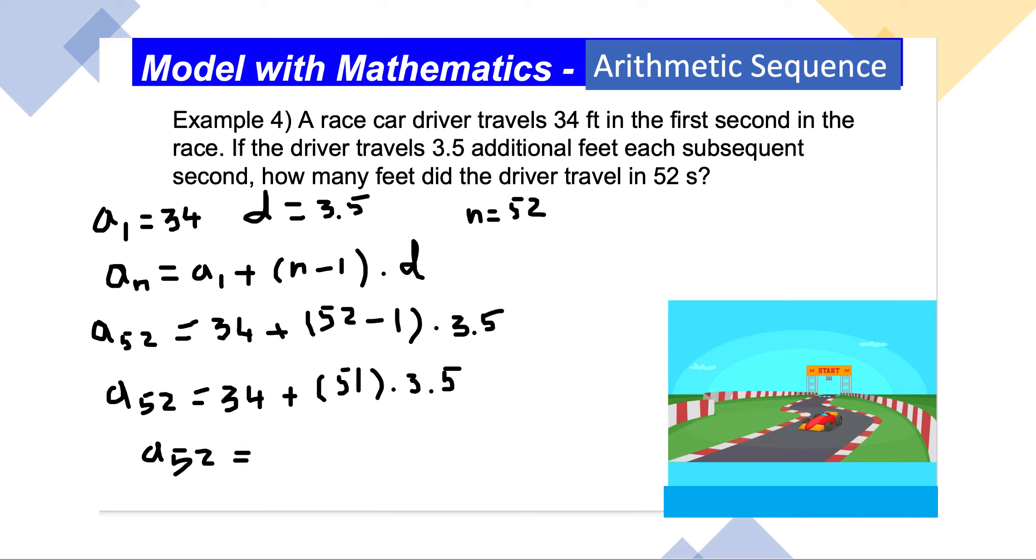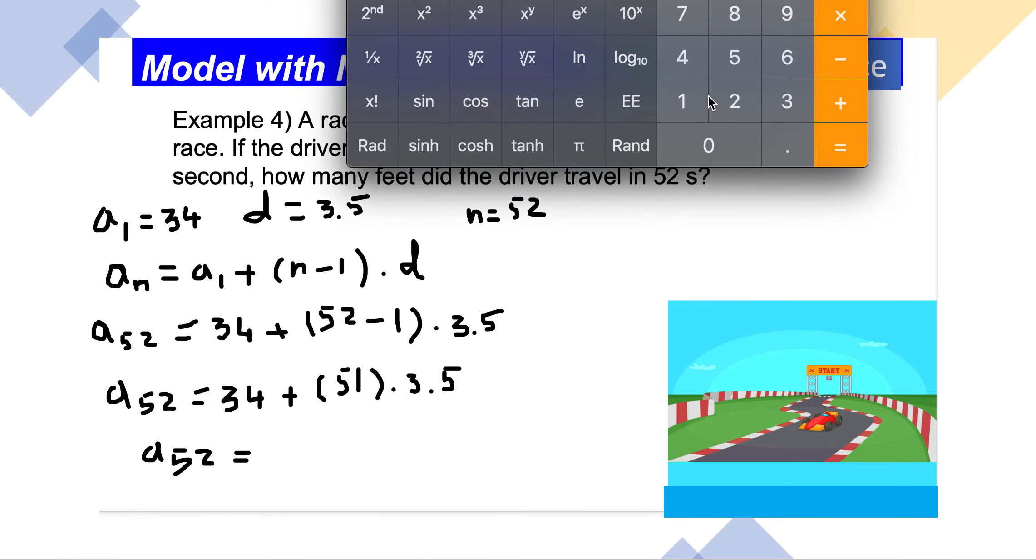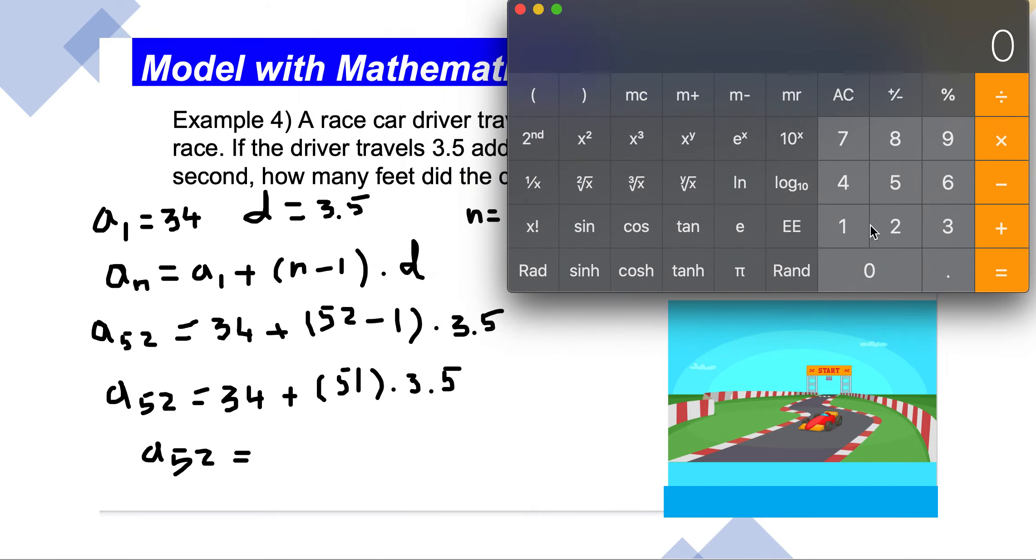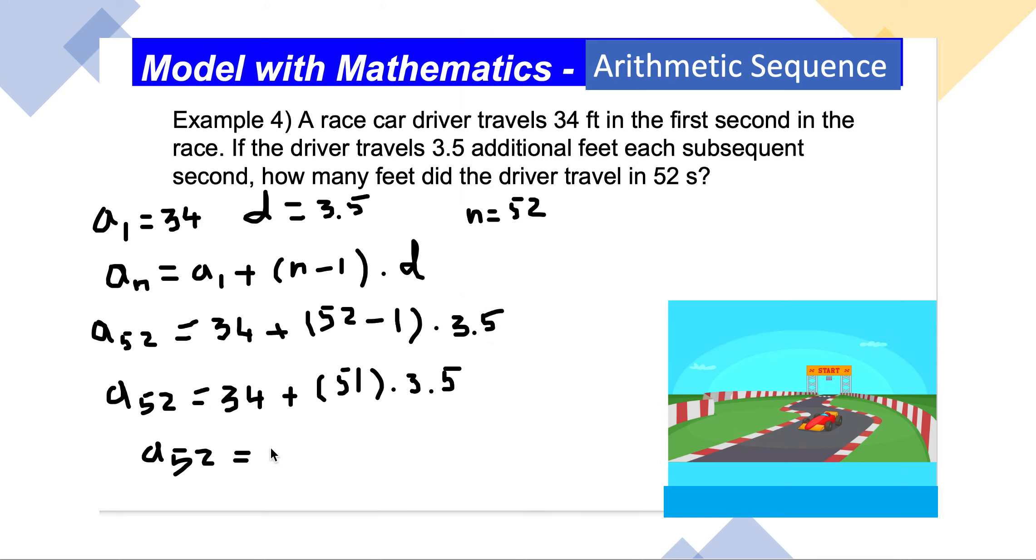Let me take a calculator. 51 times 3.5 equals 178.5, plus 34 equals...